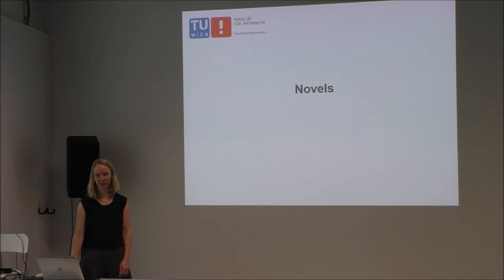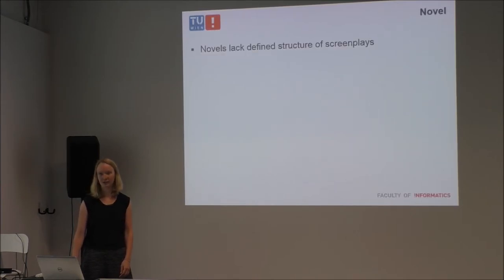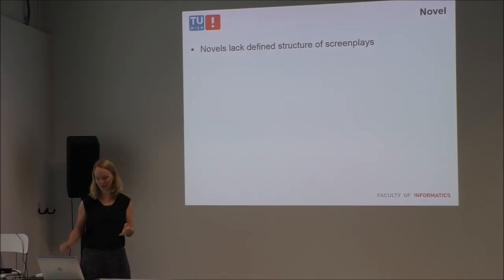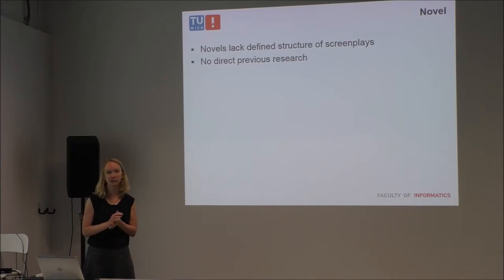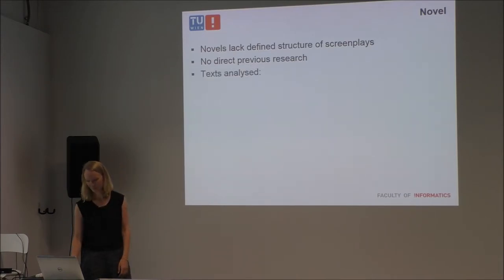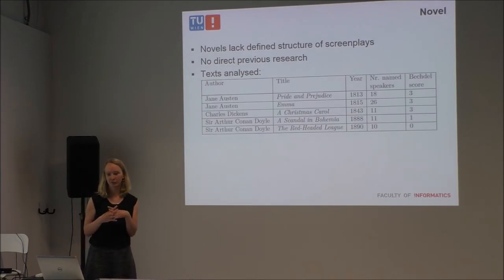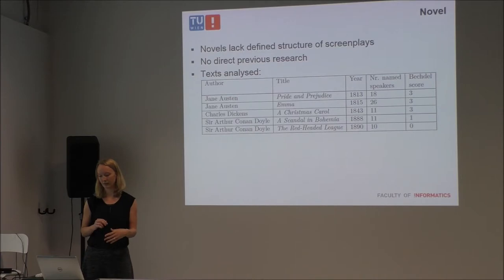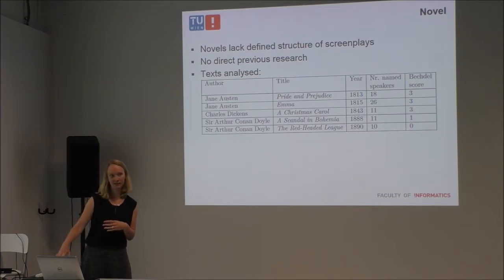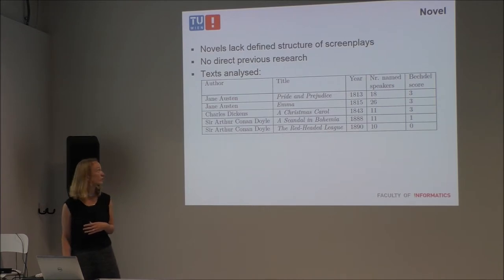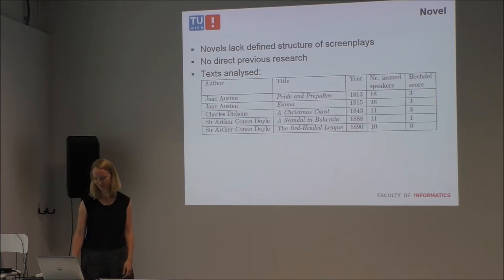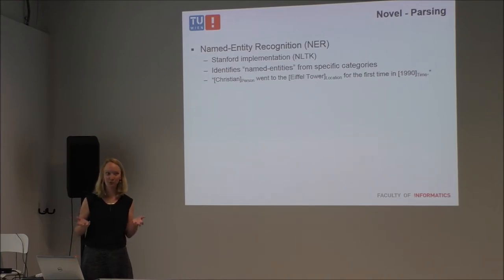The second type of text I looked at was novels. As you all know, novels lack the defined structure of screenplays — the structure we have for screenplays does not exist in novels. There was also no prior direct research I could use to test against. For this reason our sample set is fairly small: we analyzed five texts — two Jane Austen novels, a Dickens novel, and two Sherlock Holmes stories.